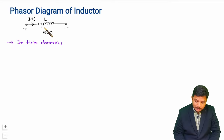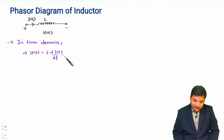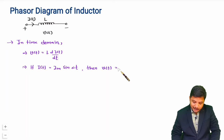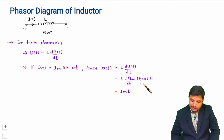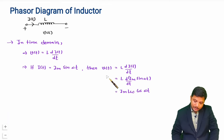Across an inductor, the voltage is V = L·di/dt. Now assume I(t) = Im·sin(ωt). Then V(t) = L·d/dt[Im·sin(ωt)] = Im·L·ω·cos(ωt). So the voltage comes out as Im·Lω·cos(ωt).